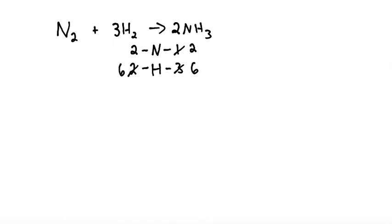We have a balanced reaction with two nitrogens on each side and six hydrogens on each side. This would be the final answer of the correct balanced reaction.